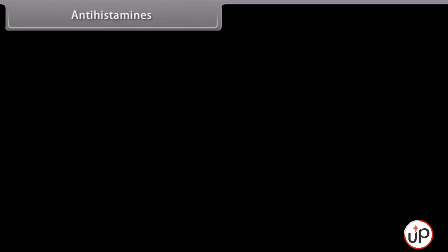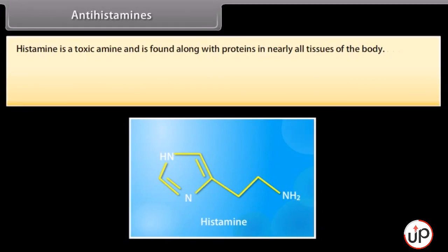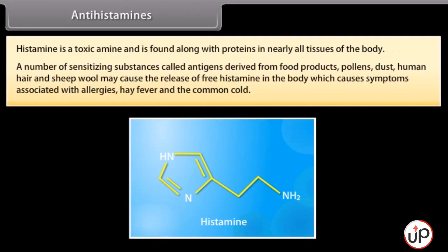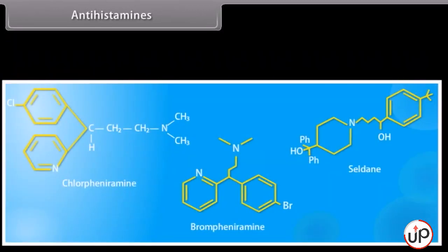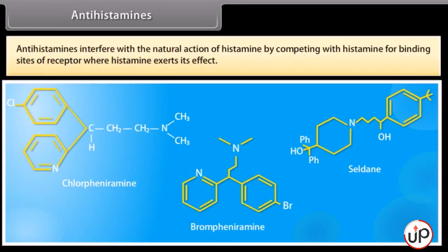Antihistamines. Histamine is a toxic amine found along with proteins in nearly all tissues of the body. A number of sensitizing substances called antigens — derived from food products, pollutants, dust, human hair and sheep wool — may cause the release of free histamine in the body, which causes symptoms associated with allergies, hay fever and the common cold. An antihistamine relieves these symptoms by blocking the action of histamine — for example, chlorpheniramine, brompheniramine and celdane. Antihistamines interfere with the natural action of histamine by competing with it for binding sites on the receptor.